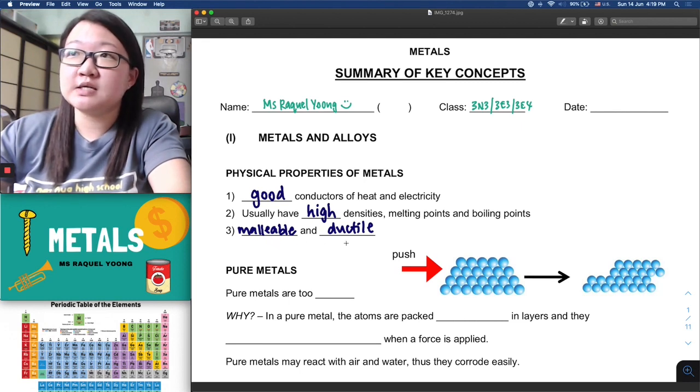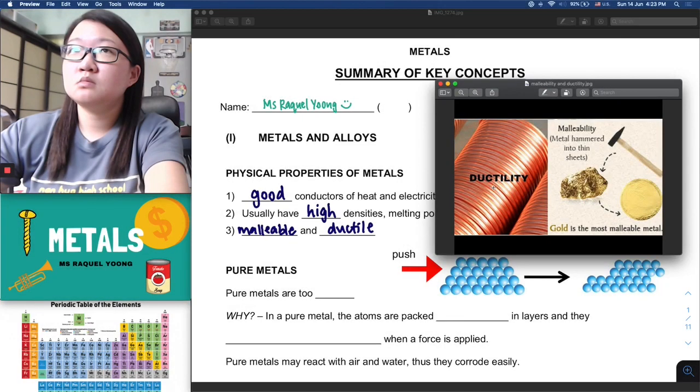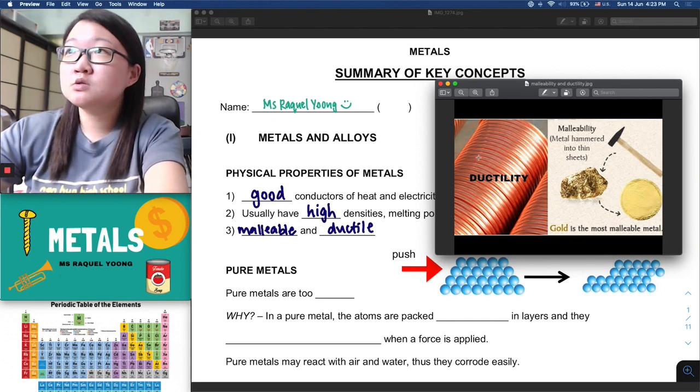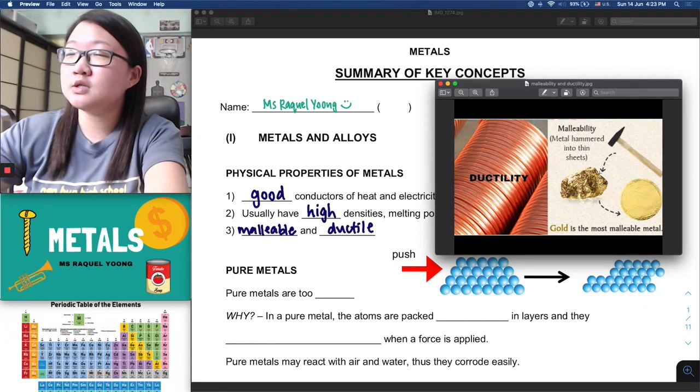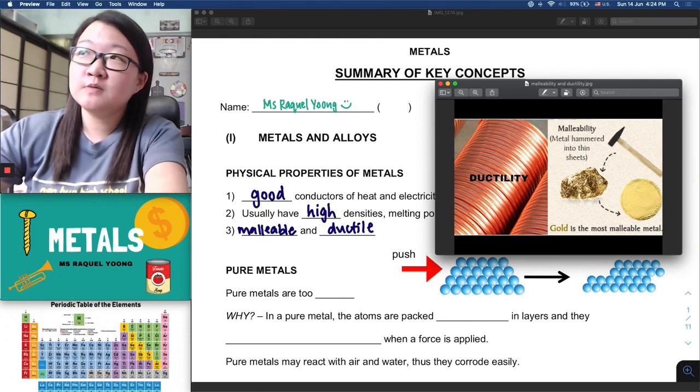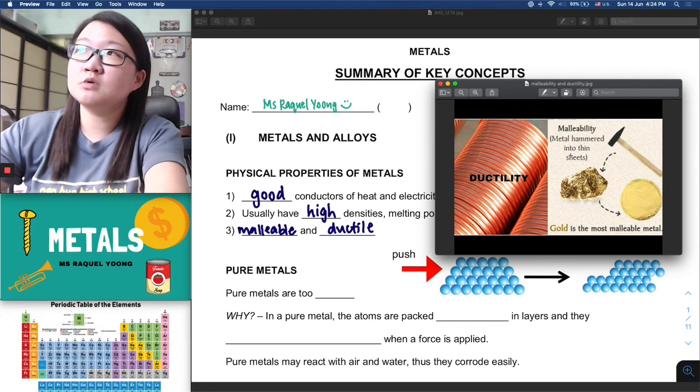You should know some common exceptions such as aluminum, which has a low density. Number three, metals and alloys are malleable as well as ductile. You must be wondering what these words mean and what are their differences. If you just look with me at this diagram over here, this should help you differentiate the two.